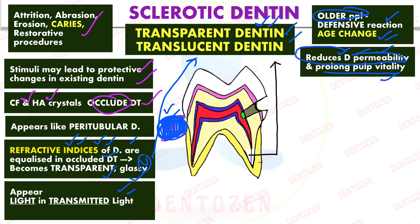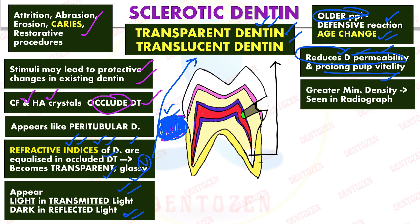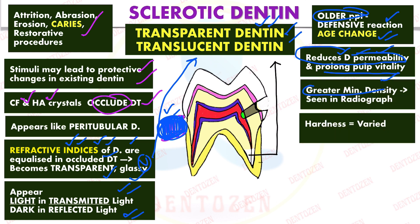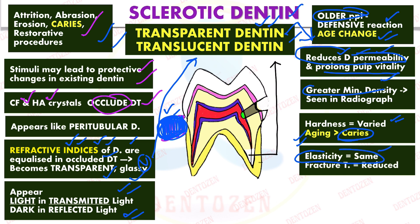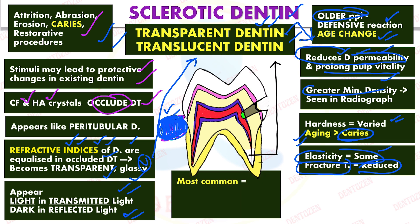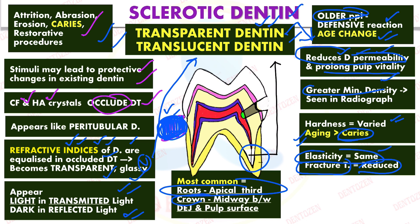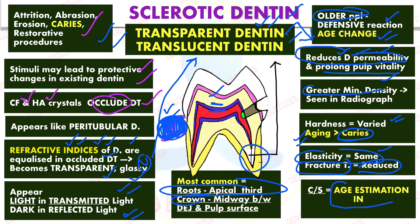Sclerotic dentine appears light in transmitted light and dark in reflected light. It has greater mineral density, so it can be seen on radiograph, but its hardness varies — sclerotic dentine formed as an age change has more hardness compared to that formed in response to caries, while its elasticity is the same as primary dentine and its fracture toughness is reduced. The most common area where it is seen is the apical third of the roots. Clinically, it can be used as a method of age estimation in forensic dentistry.